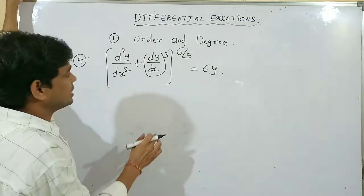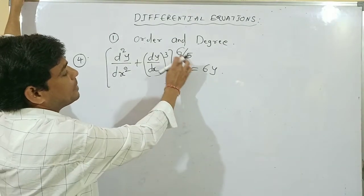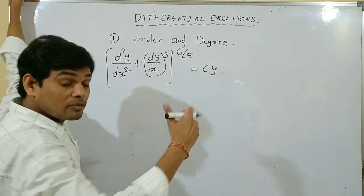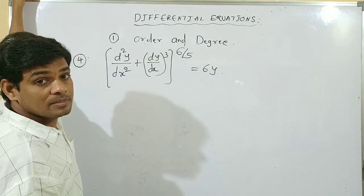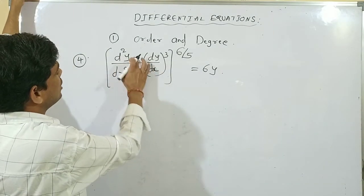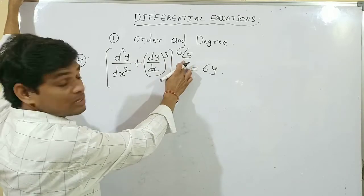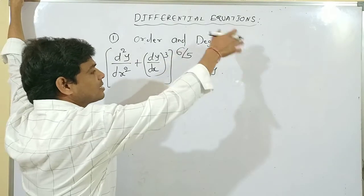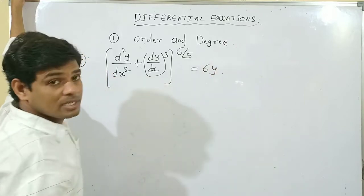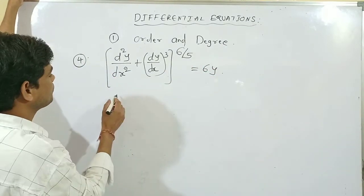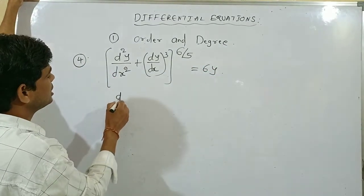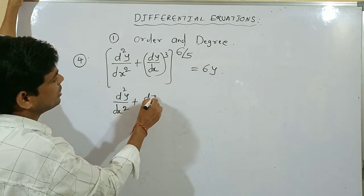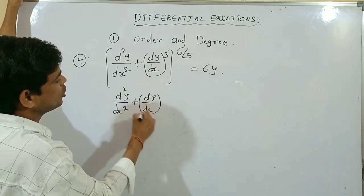Question number 4: Find the order and degree. The power is in p/q form (6/5), so convert to integer. Take the d²y/dx² term with power 6/5 to one side; raising both sides to the power 5/6 gives: d²y/dx² = (dy/dx)³ whole to power 5/6.